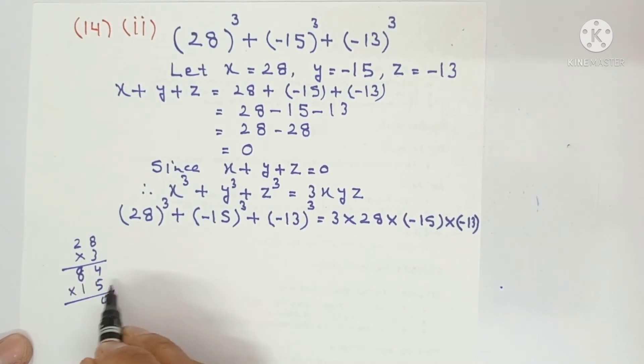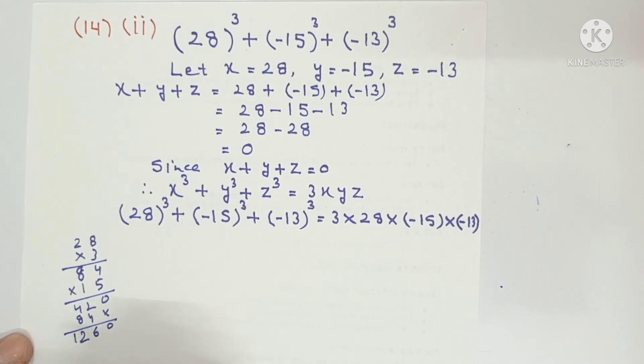Now multiply 84 by 15. 5 times 4 is 20, carry 2, 5 times 8 is 40 and 2 is 42. Then 1 times 4 and 8. The result is 1260.